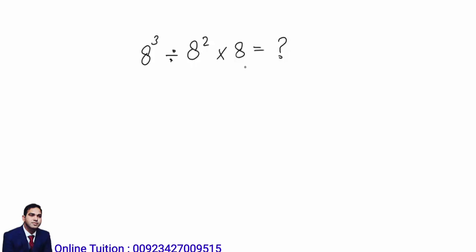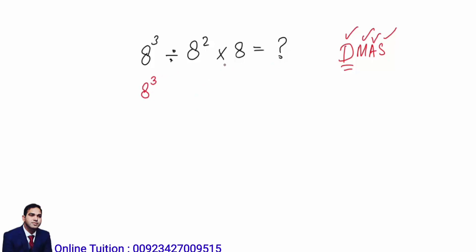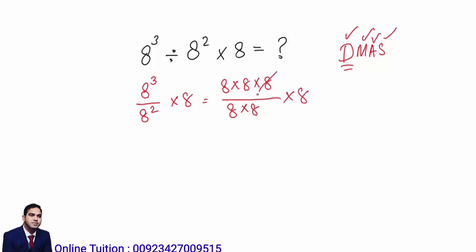Part 3: 8 to the power 3 divided by 8 to the power 2, multiplied by 8. What is the answer? We will use the DMAS rule — Division, Multiplication, Addition, Subtraction. First apply division: 8 cubed divided by 8 squared equals 8 to the power 1, which is 8. This can also be seen by writing out 8×8×8 over 8×8 — the two 8s cancel — leaving 8. Then 8 multiplied by 8 equals 64. This is the exact answer.